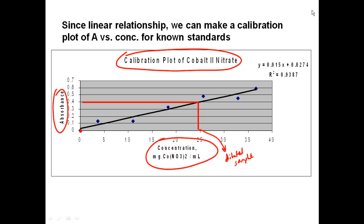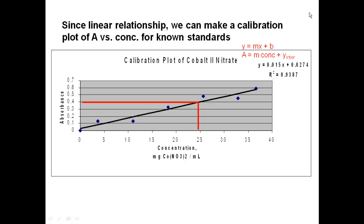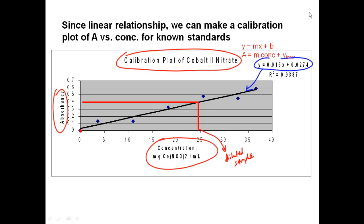Another way to determine concentration is to use the equation of the line. You may recall y equals mx plus b, where b is your y-intercept (where the line crosses the y-axis), m is your slope, x in this case is your concentration, and y is your absorbance. So you can convert that into: absorbance equals slope times concentration plus y-intercept.